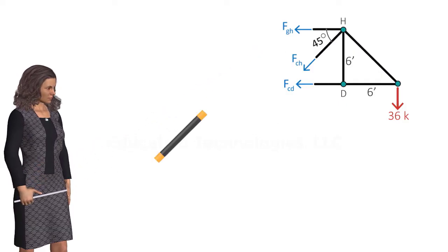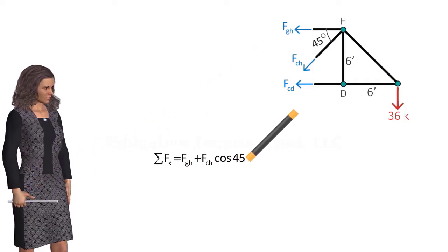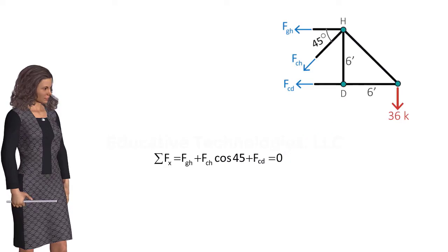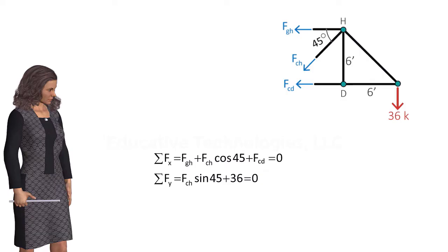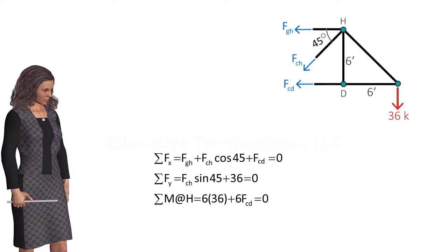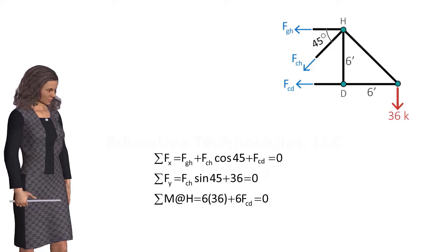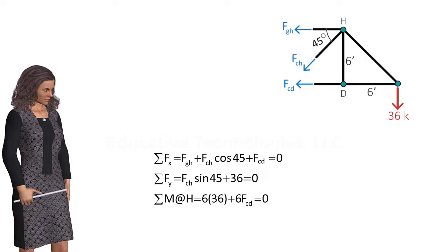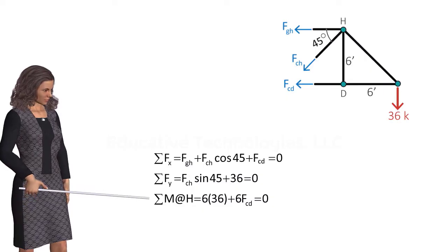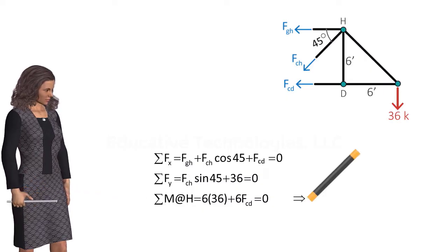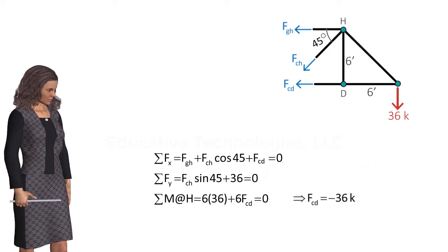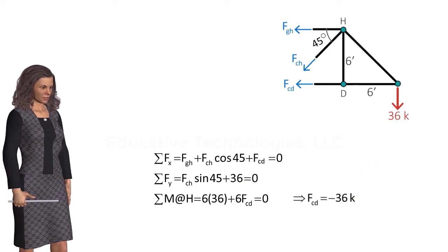The equations are: the sum of the forces in the x-direction must be zero, the sum of the forces in the y-direction must be zero, and the sum of the moments about point H must be zero. We can solve these equations for the unknown member forces. If we want to calculate FCD only, we can use the third equation. It gives FCD equals negative 36k.